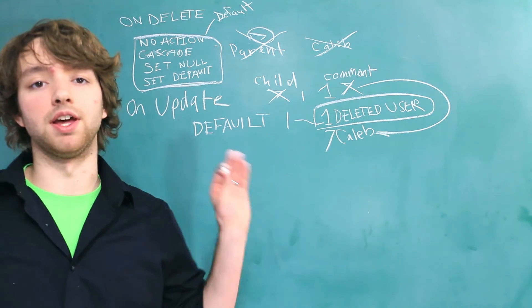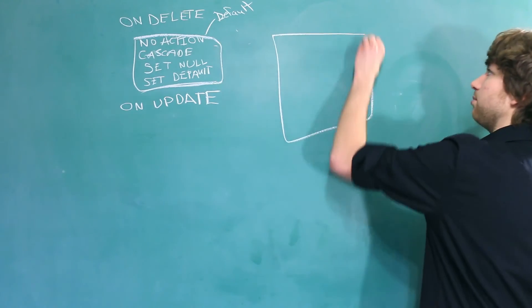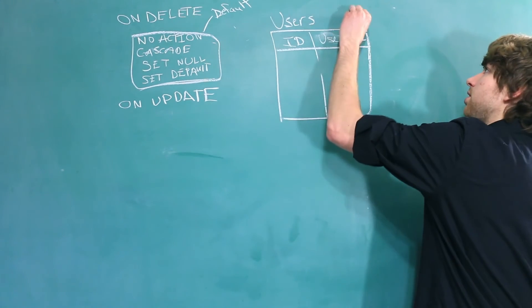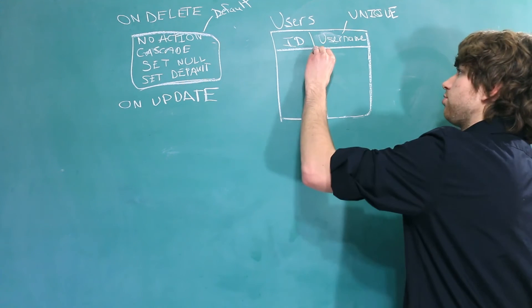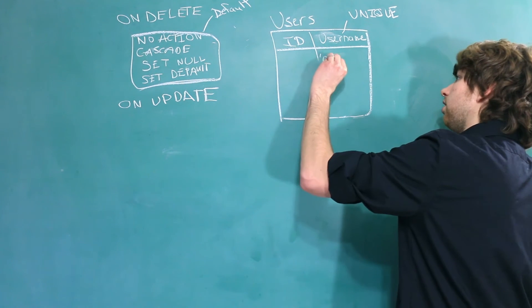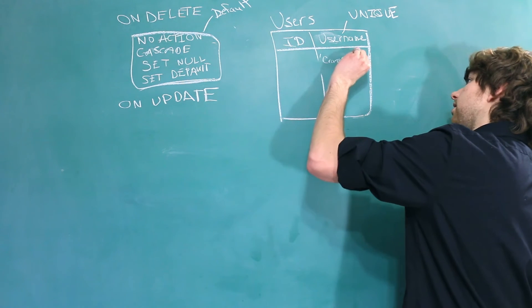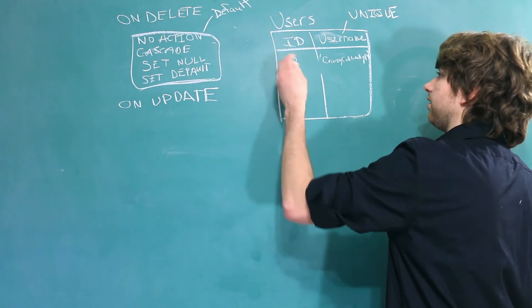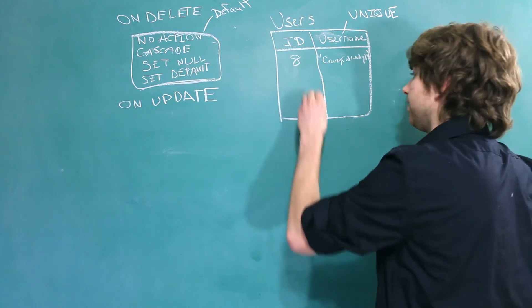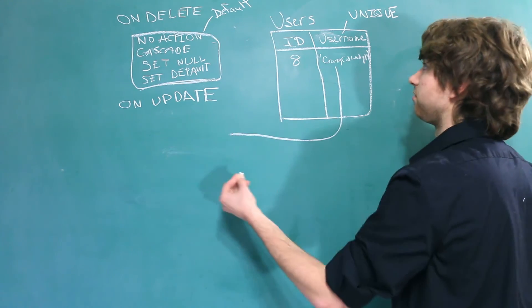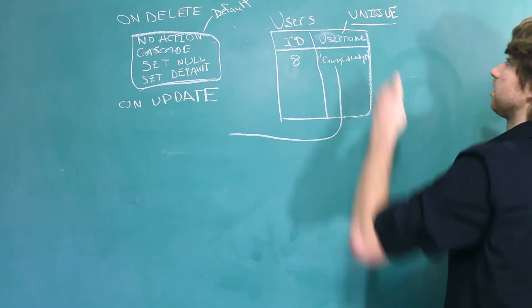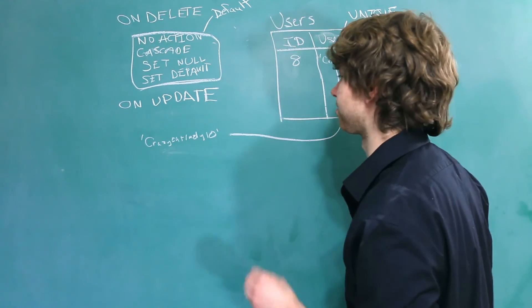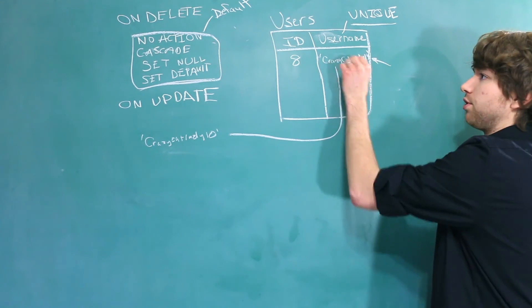For example, you might have a users table with an ID and a username, and this username is unique. Now let's say we have a username of crazy cat lady 10, and this lady has an ID of 8. And then let's say we reference this column, which we can do with the foreign key because it's labeled unique. Now instead of having an ID, we'll just have a username. Now the ON UPDATE is going to make a lot more sense. So what would happen if someone tried to update their username?